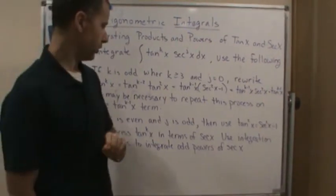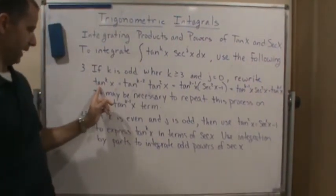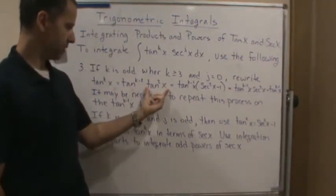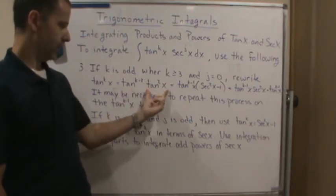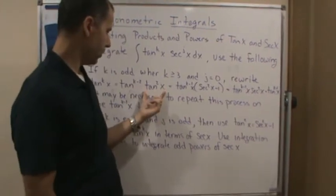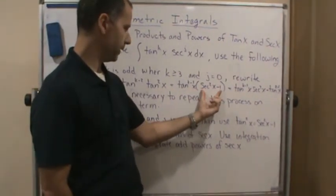Then what you're going to do is rewrite the tangent as tangent k minus two times tangent squared x. So you're going to shave off a tangent squared x. And then you're going to use the identity that tangent squared x is equal to secant squared x minus one.